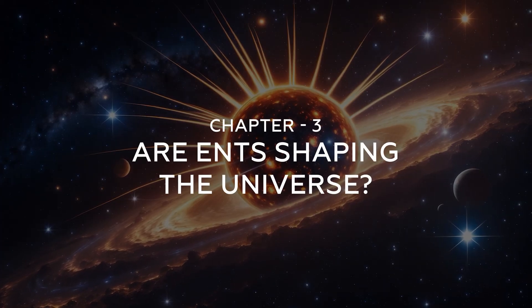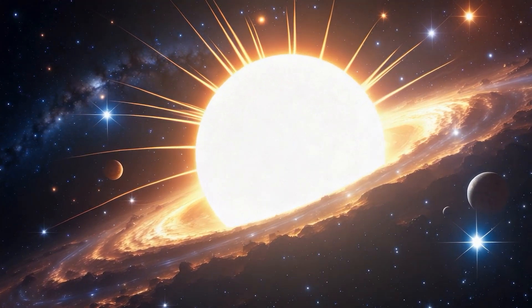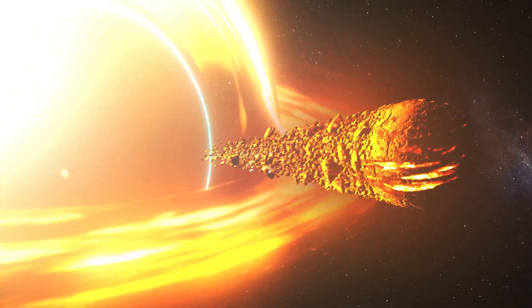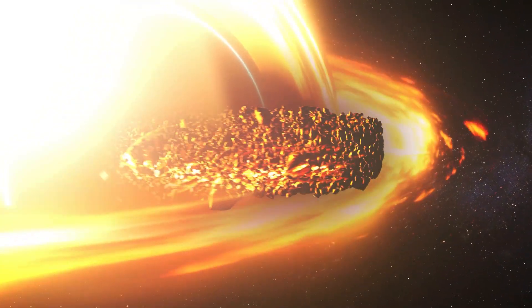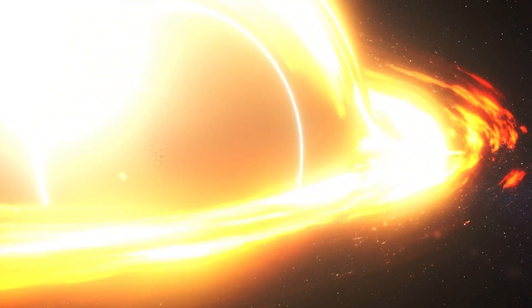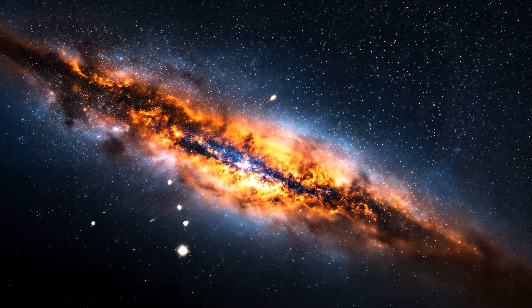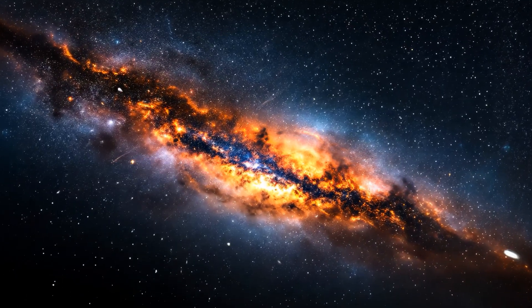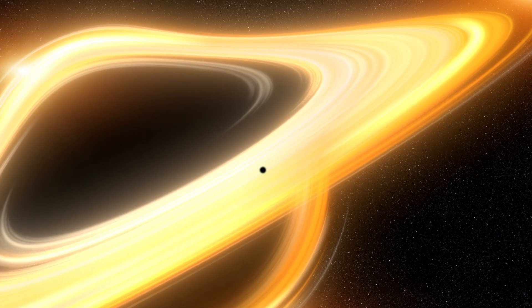The cosmos doesn't just evolve on its own. It's sculpted over billions of years by violent events. And extreme nuclear transients, as strange and rare as they seem, might be far more than cosmic fireworks. They could be sculptors of galaxies. Let's rewind a bit. We know that galaxies aren't just scattered collections of stars. They're highly structured, with spiral arms, dense cores, star-forming regions, and most importantly, a massive black hole at the center.